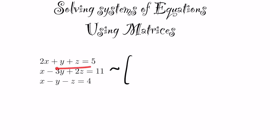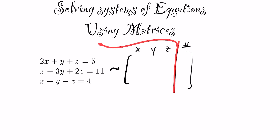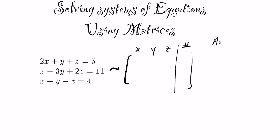With this question, the first column represents the x's, the second column the y's, and the third column the z's. A vertical line is placed through the matrix, and the other side represents the numbers — that line signifies the existence of an equal sign. This is referred to as an augmented matrix.